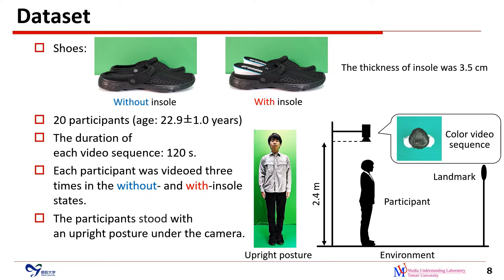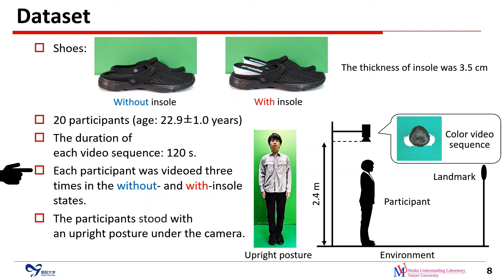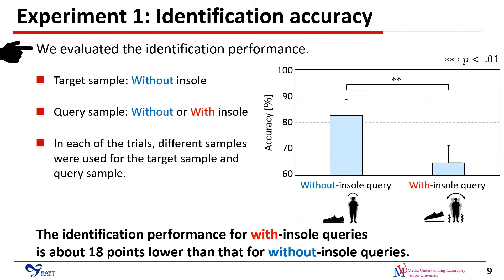We explain the dataset of our investigation. We used shoes for the without-insole state and the with-insole state. The thickness of each insole was 3.5 cm. We acquired video sequences of the body sway of 20 participants. The duration of each video sequence was set to 120 seconds. Each participant was videoed 3 times in the without and with-insole states. The participants stood with an upright posture under the camera.